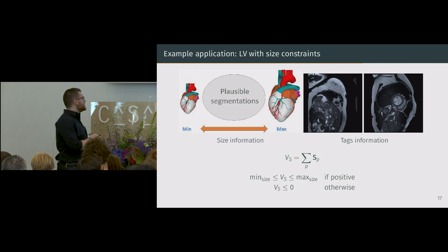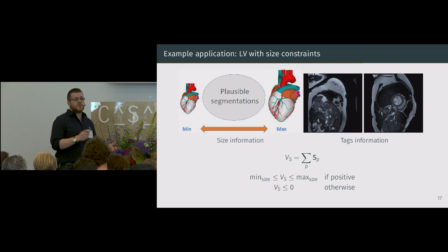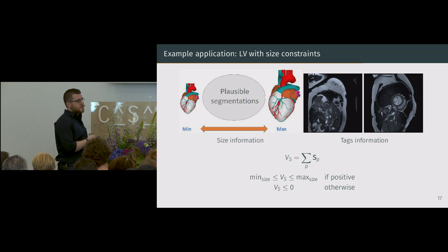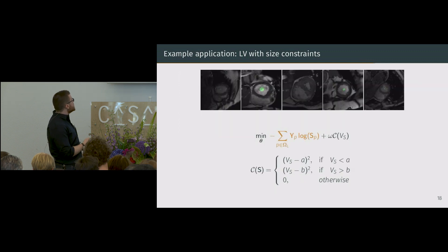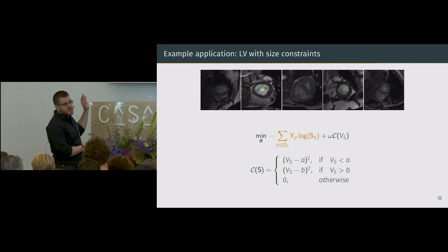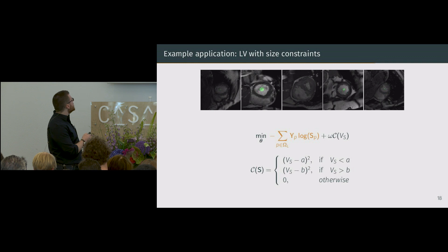When computing the size, we use directly the softmax probabilities, which are really close to zero and one. We do that because if we compute the size after thresholding with argmax, we won't be able to backpropagate. This doesn't affect the computed size much. So we end up with a penalty based on the size and bounds A and B — depending on whether the image has a left ventricle or not — combined with a cross-entropy applied only on the pixels with labels. The remaining pixels receive global supervision from the global penalty.